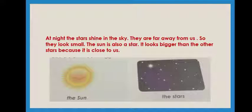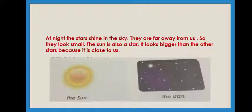At night, the stars shine in the sky. They are far away from us, so they look small. The sun is also a star. It looks bigger than the other stars because it is close to us.